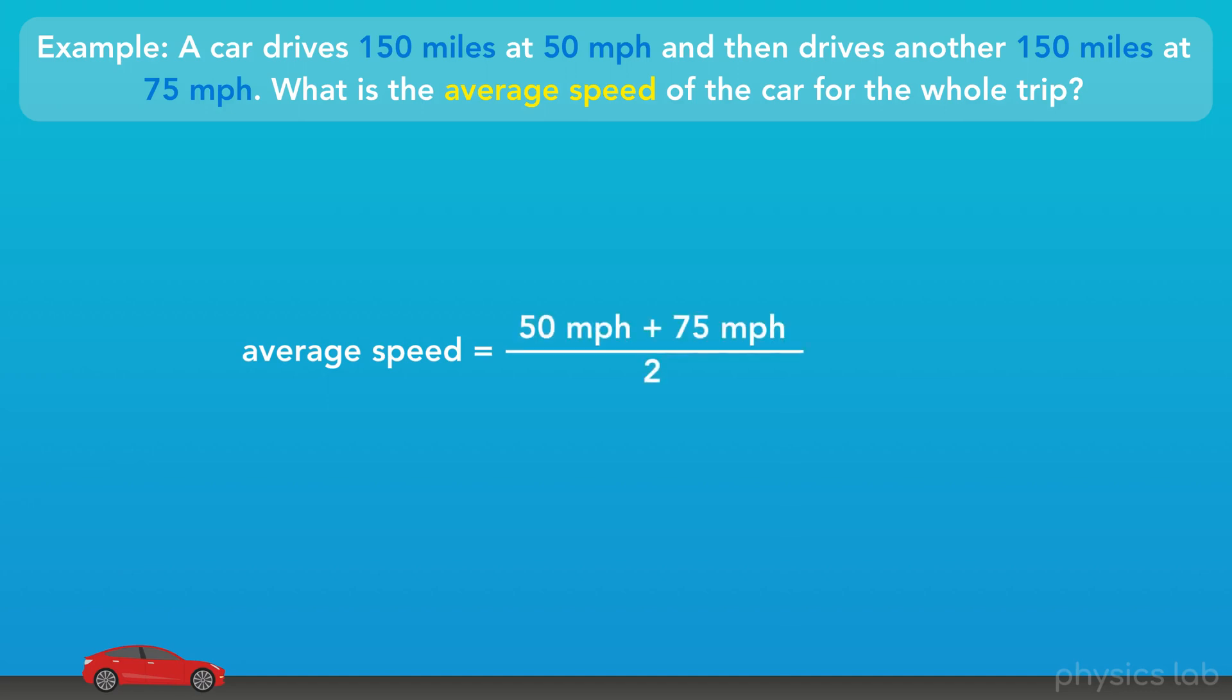That would be 50 miles per hour plus 75 miles per hour divided by 2, which gives us 62.5 miles per hour. That seems logical, right? Well, this is actually not the average speed.